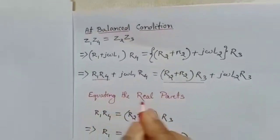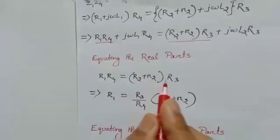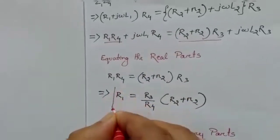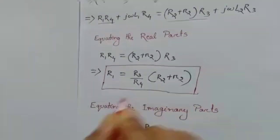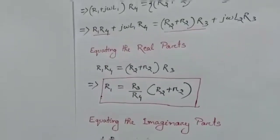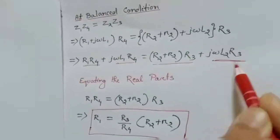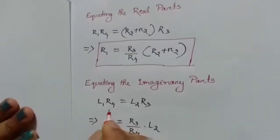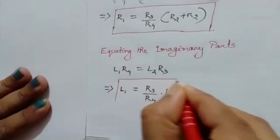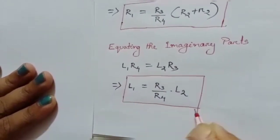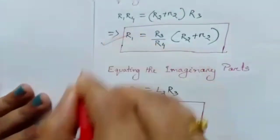After equating the real parts, we get R1 × R4 = (R2 + r2) × R3, from which the unknown resistance R1 = (R3 / R4) × (R2 + r2). Similarly, equating the imaginary parts gives L1 × R4 = L2 × R3, and finally the unknown inductance L1 = (R3 / R4) × L2. So L1 and R1 are the two unknown quantities found using the balanced bridge condition.